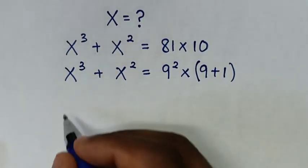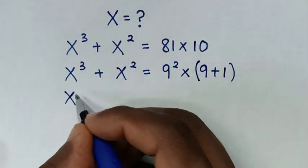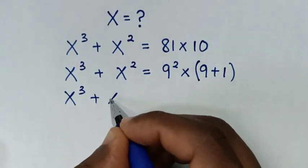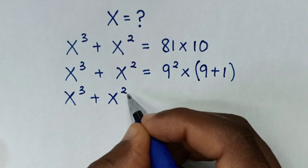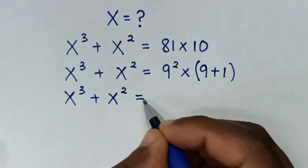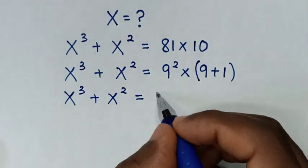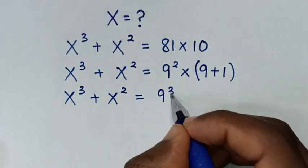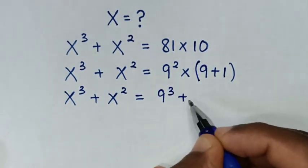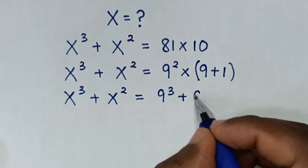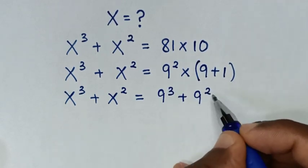In the next step, x³ + x² = 9² × 9, which is 9³, then plus 9² × 1, which is 9².